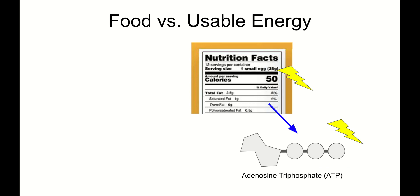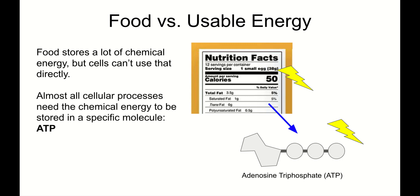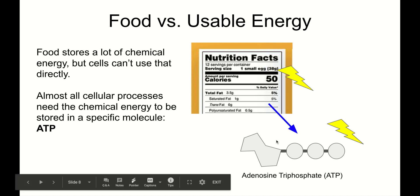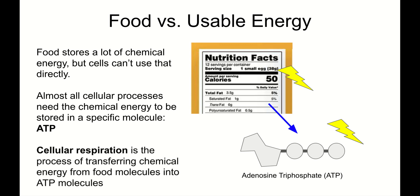When we talk about food, sometimes we say food is energy. But the thing is, food is not usable energy yet. Food stores a lot of chemical energy. But cells can't use that energy directly. They use a very particular type of chemical energy. Almost all cellular processes need the chemical energy to be stored in a specific molecule: ATP. Cellular respiration is just the process of transferring chemical energy from food molecules into chemical energy stored in ATP molecules.